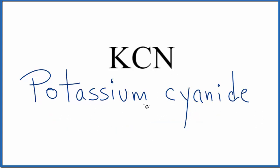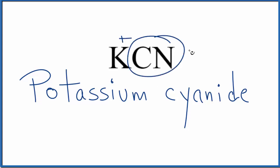If you were given the name potassium cyanide and asked to write the formula, you need to know that you have potassium, the metal, and then cyanide, a polyatomic ion. So you'd write potassium and then the cyanide. And since K — potassium — is in group one, it's one plus, and the whole cyanide ion is always one minus, so the charges balance out. The formula for potassium cyanide is just KCN.